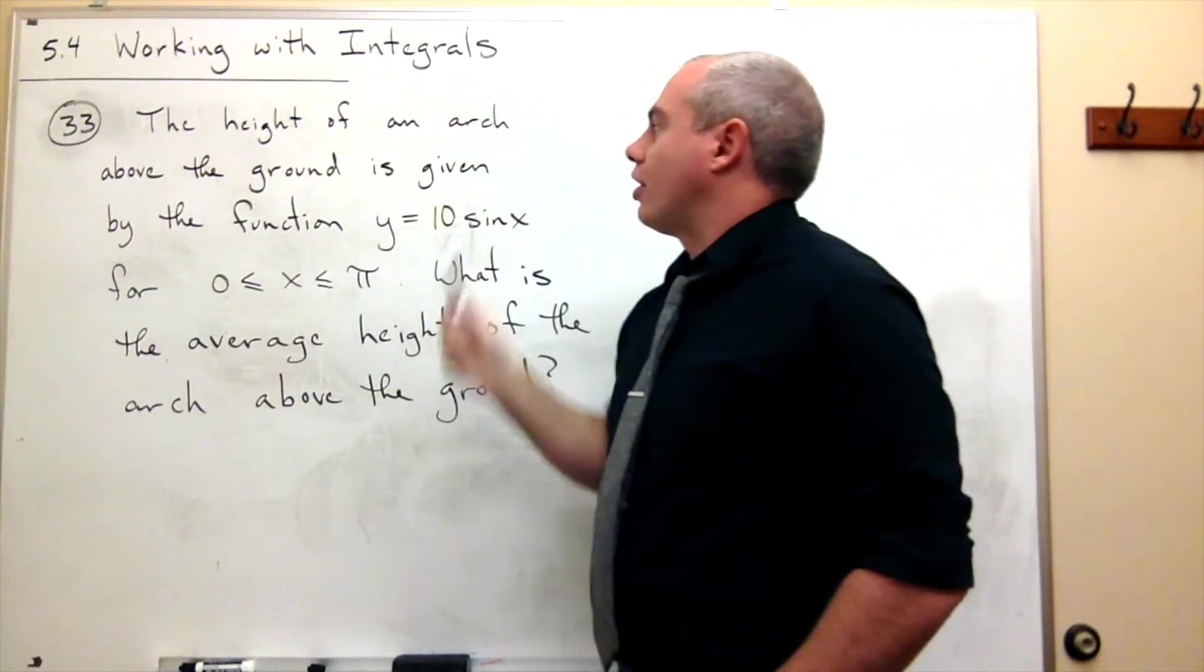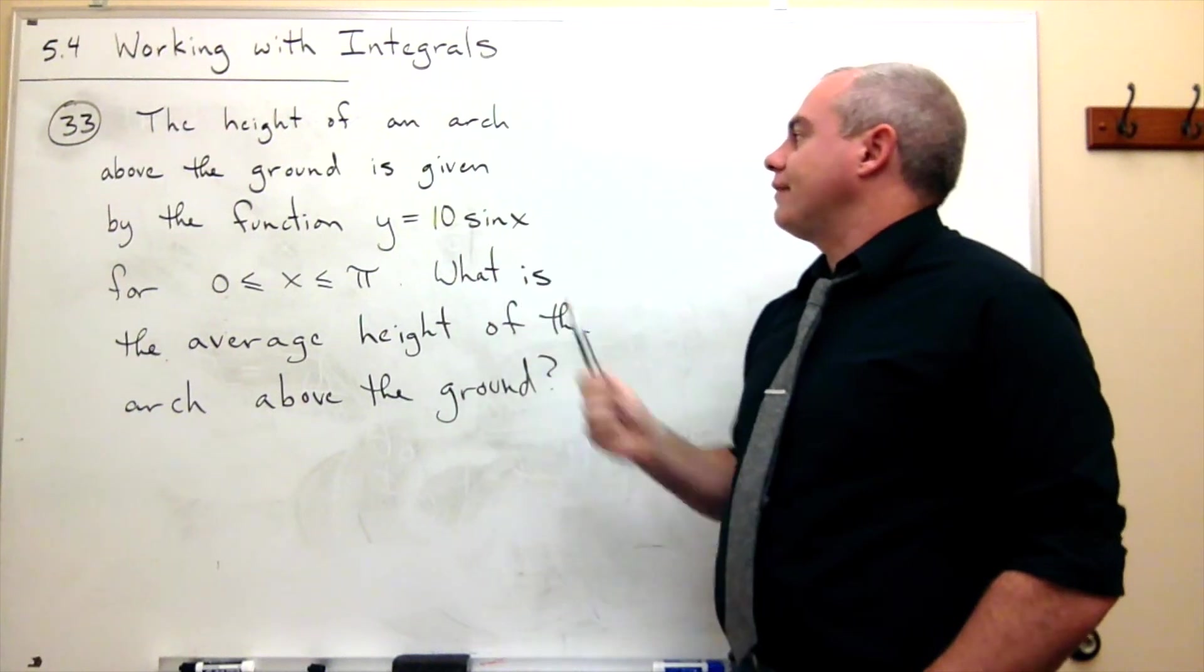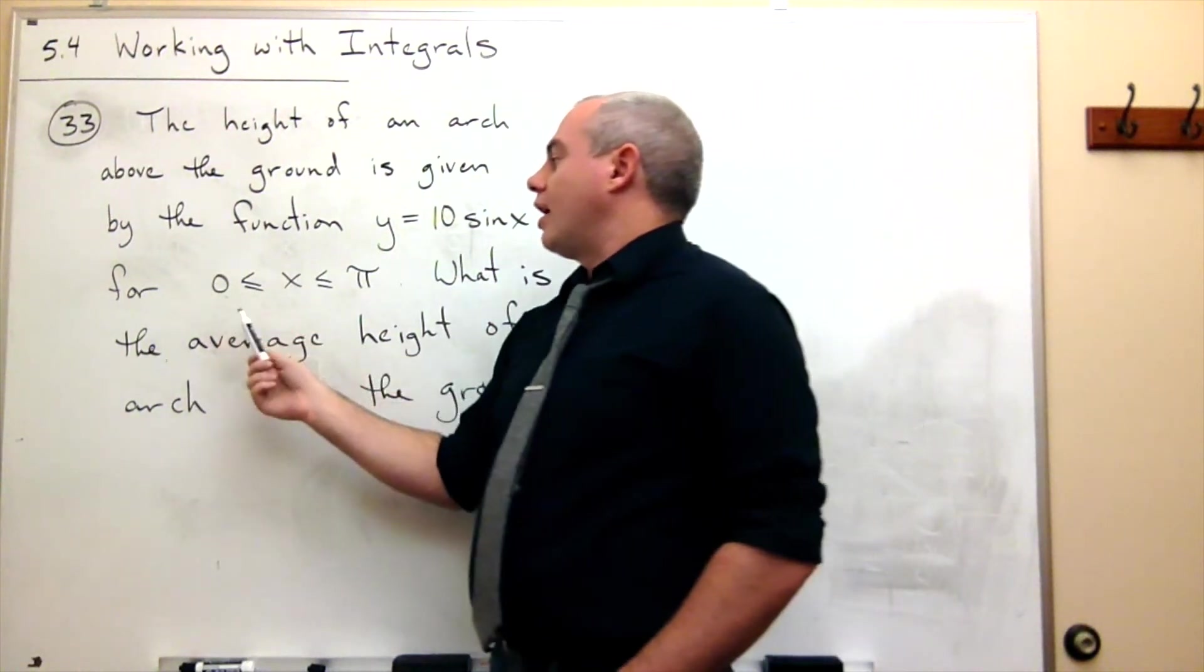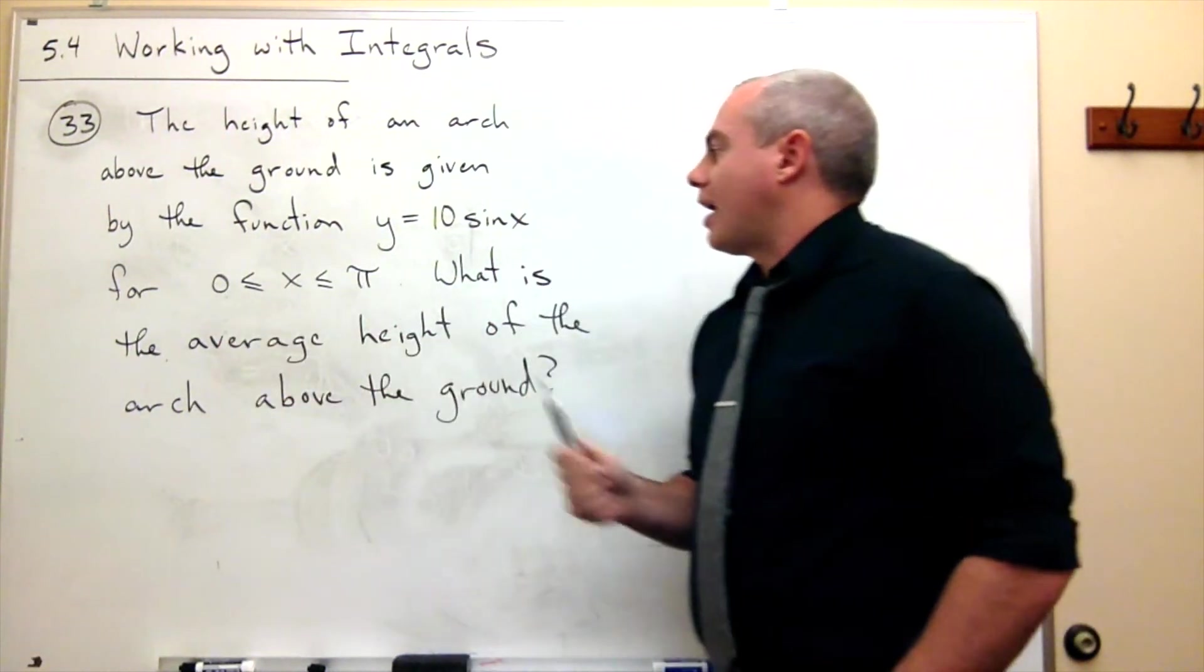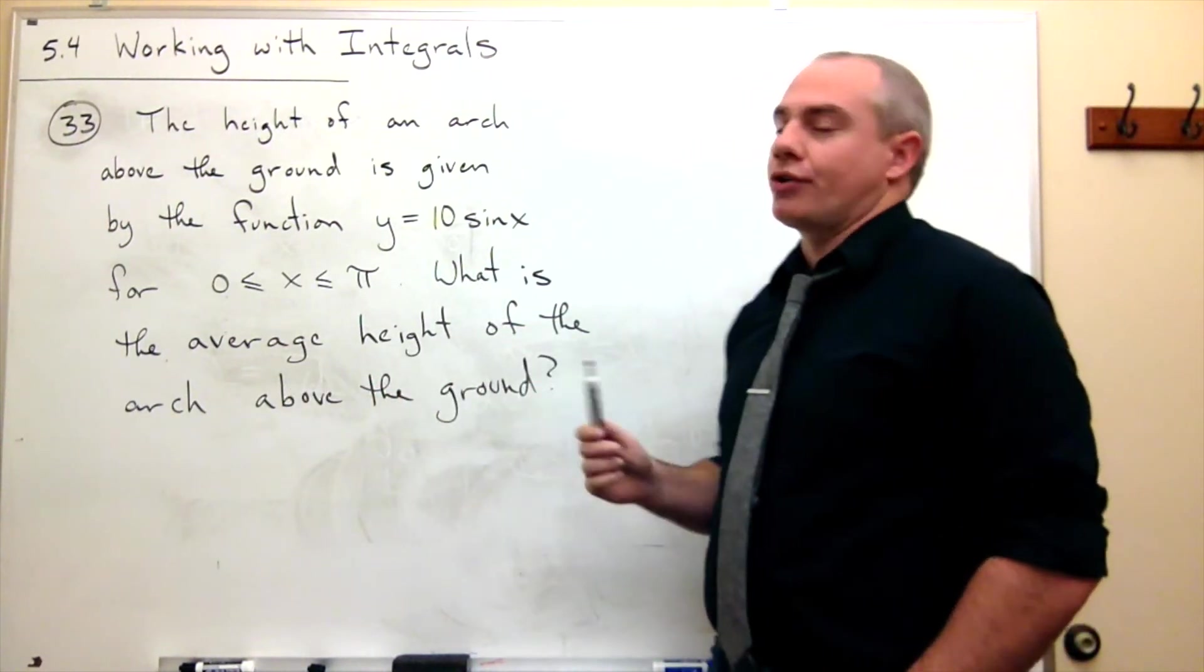The height of an arch above the ground is given by the function y equals 10 sine x for x between 0 and pi. We'd like to know what is the average height of the arch above the ground.